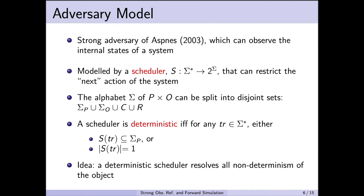In the context of hyperproperties, we must also define the adversary model we are working with. Following Atia and Enea, we use a very strong adversary model originally described by Asmus in 2003, where the strong adversary can observe the internal states of a system and influence its behavior. We model the strong adversary using a scheduler, which is a function from a sequence of actions to a set of next actions, able to observe the history of the system and restrict the next action.